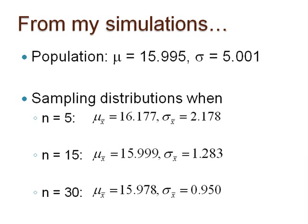Can you identify the specific mathematical relationship between the population standard deviation, the standard deviations of the sampling distributions, and the sample size n? Specifically, the standard deviation of each of the sampling distributions is the population standard deviation divided by the square root of n. The sample size n is the size of each sample we take from the population — our sample sizes are 5, 15, and 30. Our simulation standard deviations for each sample size are very close to the quantity sigma over the square root of n.